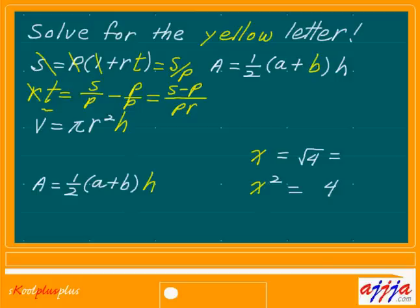What about this one? I treat this like the right-hand side — v, just like this one. So h equals v divided by — scratch this one — pi r squared. That's it, very simple.